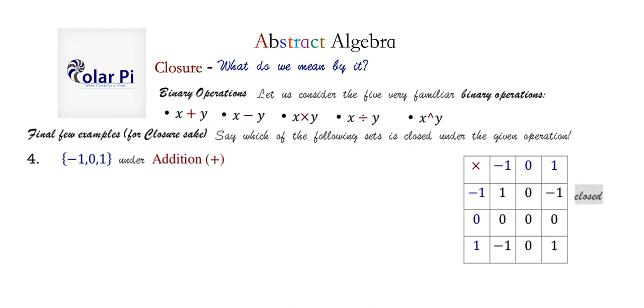Now, just as a final note, notice that if we change this set from negative 1, 0, 1 to this, which is if we turn it to negative 2, 0, 2 instead of negative 1, 0, 1, then under multiplication, it would not be closed because, for example, negative 2 times 2 is negative 4, and that's not in this set. I feel like we are now very well taken care of as far as closure. And so we have closure.